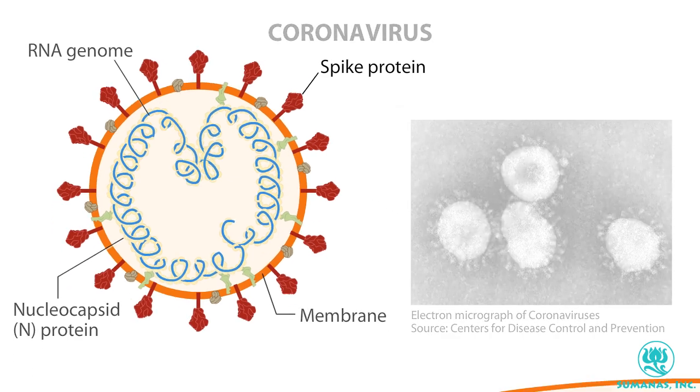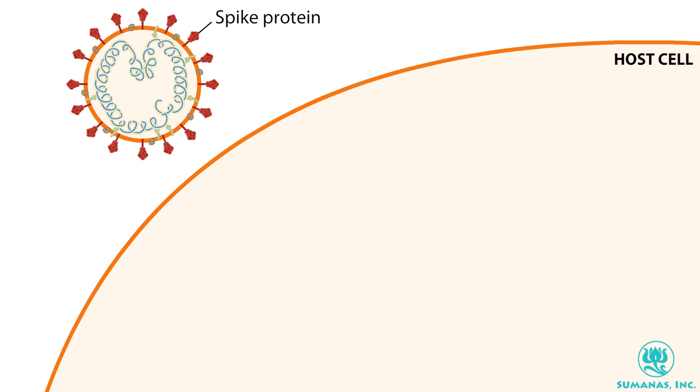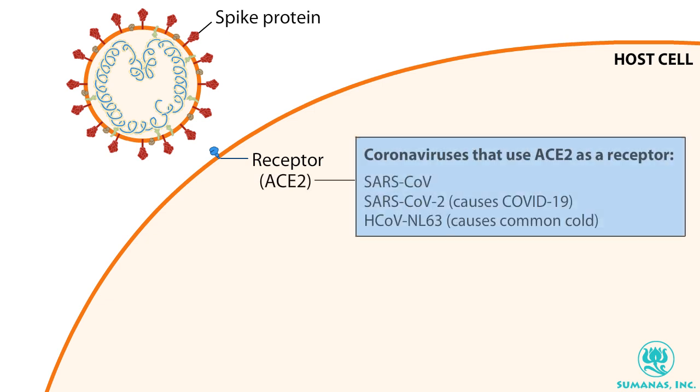To replicate, a virus must enter a host cell. Coronaviruses bind to receptors on the cell surface. The host protein, ACE2, is used by some coronaviruses, including SARS-CoV-2, which causes COVID-19.